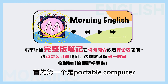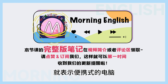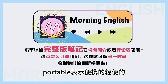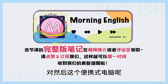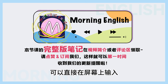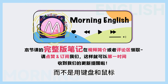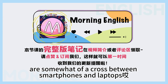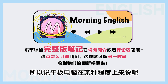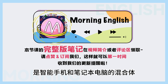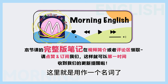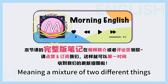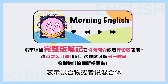Tablet also means a small portable computer that accepts input directly on a screen, rather than via a keyboard or a mouse. 这个词义里面很多关键词哦，首先第一个是portable computer，就表示便携式的电脑。Portable表示便携的、轻便的。然后这个便携式电脑呢，可以直接在屏幕上输入，而不是用键盘和鼠标，那可不就是平板了吗？Yeah, exactly. So tablets are somewhat of a cross between smartphones and laptops. 所以说平板电脑在某种程度上来说呢，是智能手机和笔记本电脑的混合体。Cross这里就是用作一个名词了，meaning a mixture of two different things，表示混合物或者说混合体。